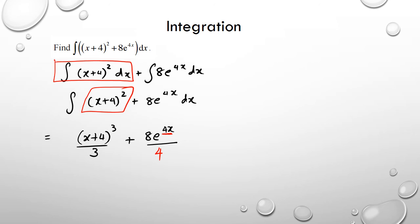And then of course, don't forget your plus C. So you don't need to simplify this, but if you want to, the only simplification you really can do is just get rid of that 8 and 4, which is 2e^(4x) plus C.